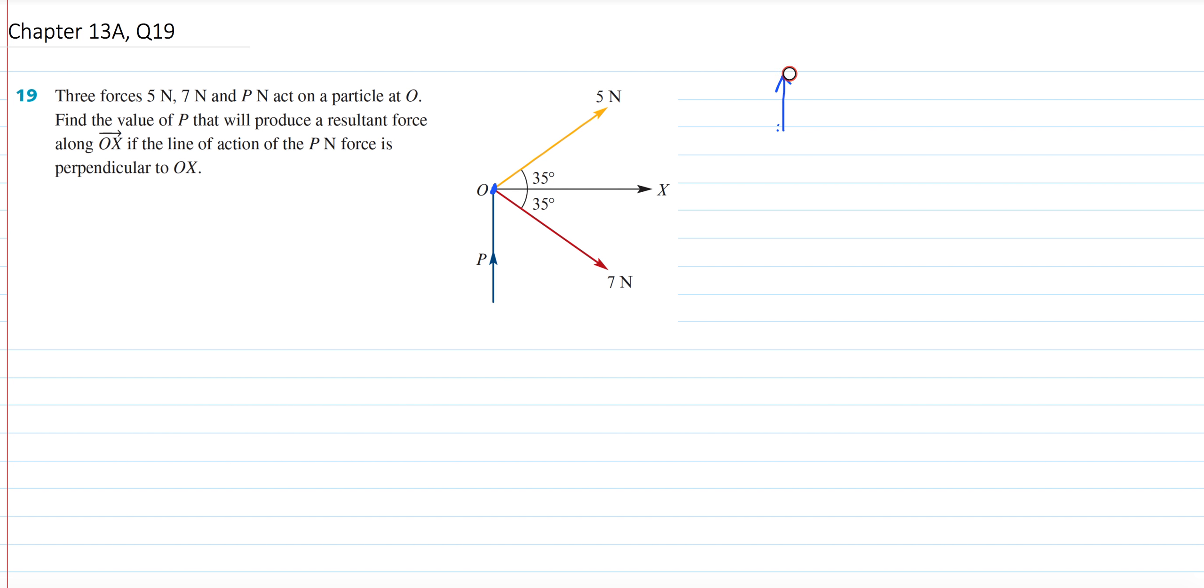So what that means is, whatever force is going up, cancels out with whatever force is going down. So we just have to look into that. So let's have a look at all our forces. We've got 5N going up, we've got 7N going down, and we've got PN.